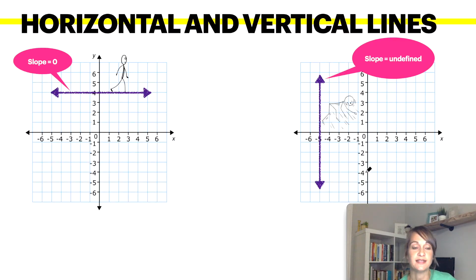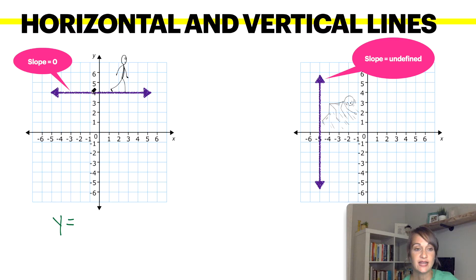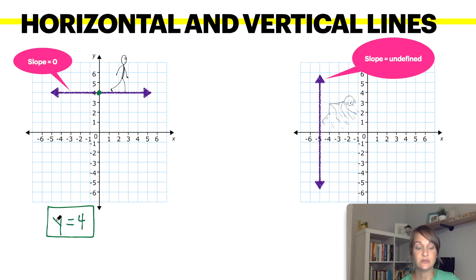Horizontal and vertical lines. Any horizontal line is going to give you a slope of 0. Think of a person walking along a straight path — they are not walking on an incline or a decline, they are walking straight across, so the slope is 0. All horizontal lines are going to be in the form y equals whatever the y-value is. In this line, it crosses at 4, so the equation is y equals 4. It's not just a number — it needs to be y equals. So all horizontal lines are y equals whatever the y-value is.